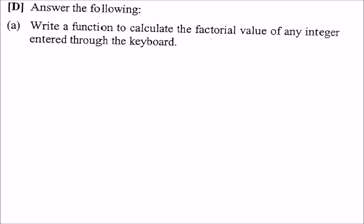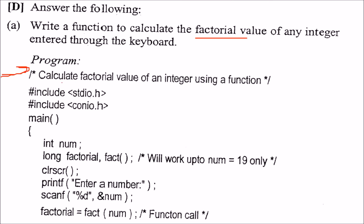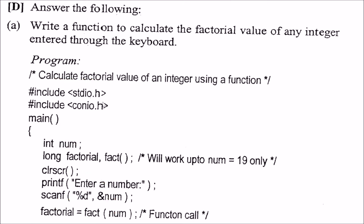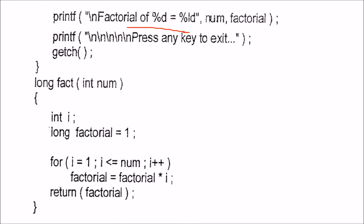Write a function to calculate the factorial value of any integer entered through the keyboard. We include the files, declare a fact function, then take the number from the user. We pass this value to the factorial function and print the result. Inside the function, we start with factorial equal to 1, then from 1 to num, factorial equals factorial into i, and we return the factorial.